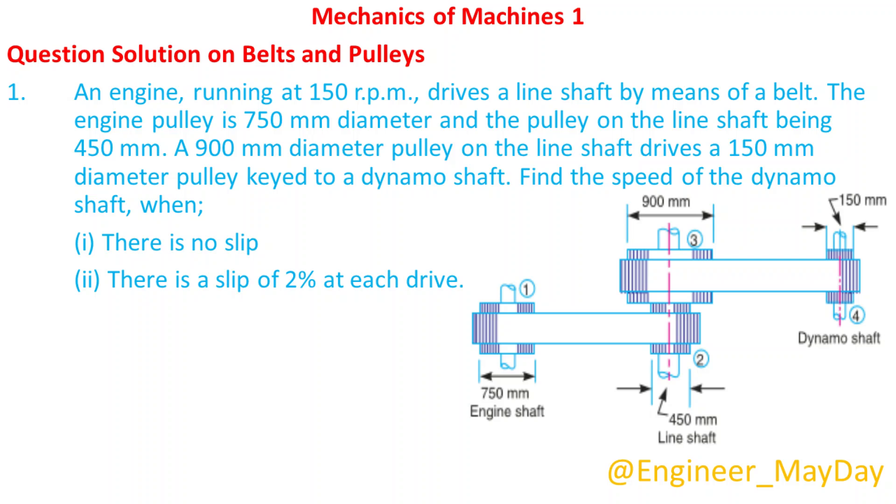Find the speed of the dynamo shaft, when: 1. There is no slip. 2. There is a slip of 2% at each drive.